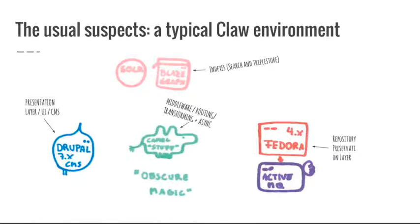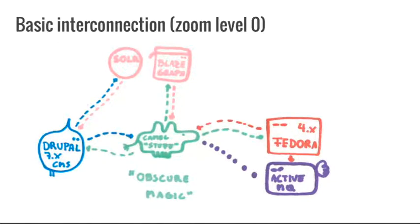Basically, this is how our different stack pieces look like. A Claw environment. We have this presentation layer user interface by CMS. You already know from Islandora 1. Drupal. We have these indexes that we can use to search and to also ask about RDF, solar, basic research, blaze graph, or triple store. We have this middleware routing, transforming, and async stuff, I will name that, based on CAMEL. We will start naming this the obscure magic part. And then we have our preservation layer, our repository. And we talked about that last two sessions. So, I think you already have clear how Fedora works and what role active MQ plays there.